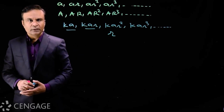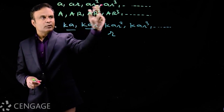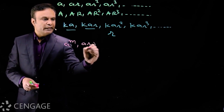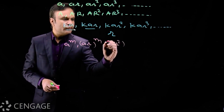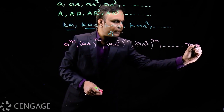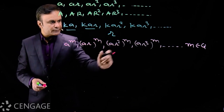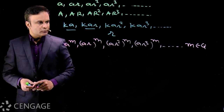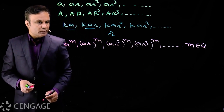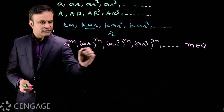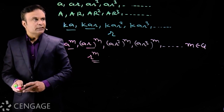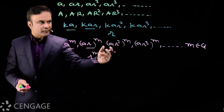Now suppose each term of this GP is raised to power m, where m belongs to the rationals. The new terms are a^m, (ar)^m, (ar²)^m, (ar³)^m, and so on. This is also a GP. The common ratio is r^m. So the property is: if you raise each term of a GP to power m, the new terms also form a geometric progression with common ratio r^m.